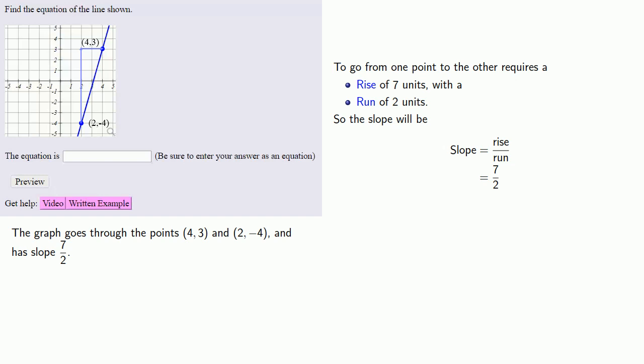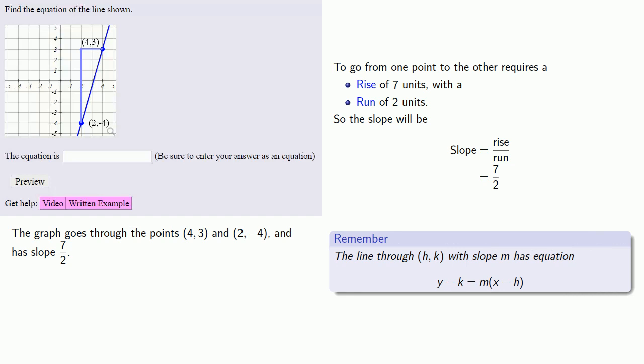The easiest way to write the equation of a line is to use the point-slope form. The line through the point h, k with slope m has equation y minus k equals m times x minus h.